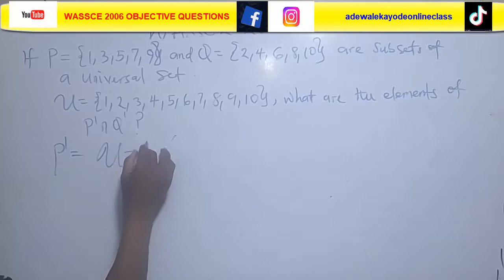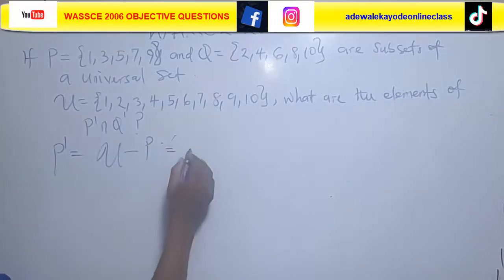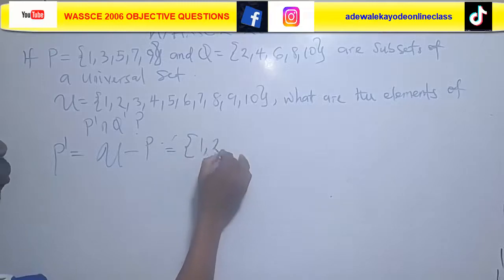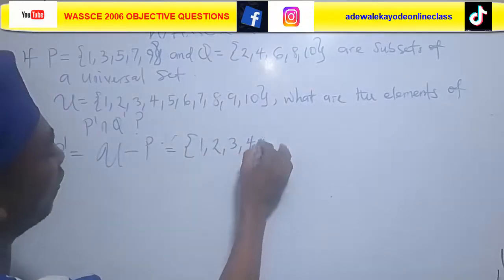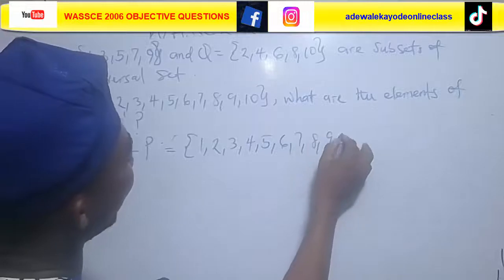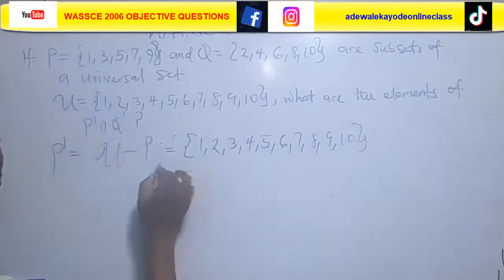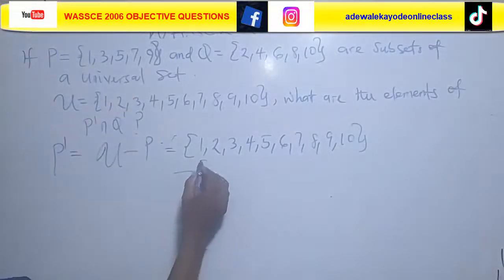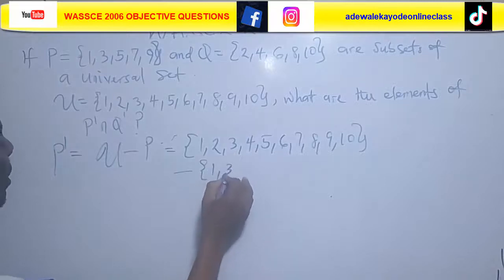Don't forget, your P complement is equal to universal set minus set P. And what is our universal set? That's {1, 2, 3, 4, 5, 6, 7, 8, 9, 10}.